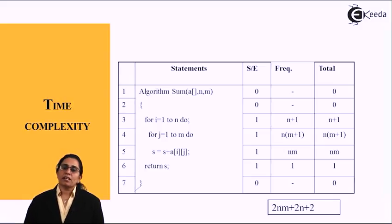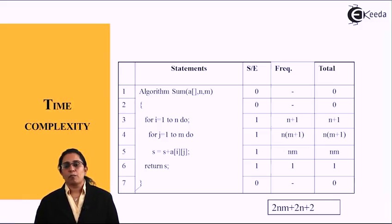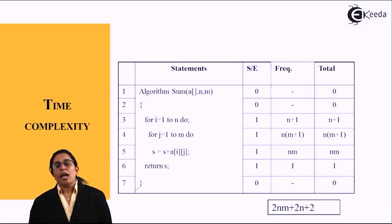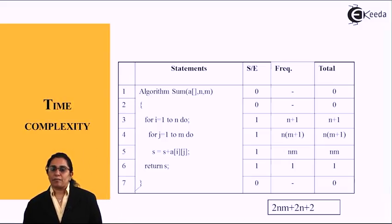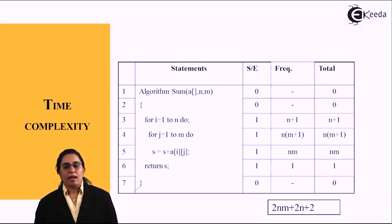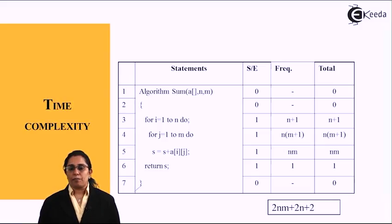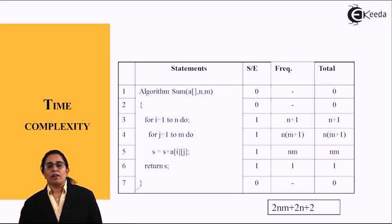The assignment statement s equals s plus a of ij is executed n into m number of times. And return s takes a frequency of 1 and time complexity of 1. If we add up all together, the time complexity for this code is 2nm plus 2n plus 2. Thank you.